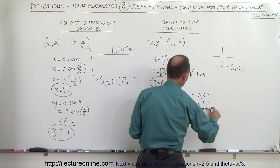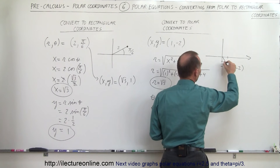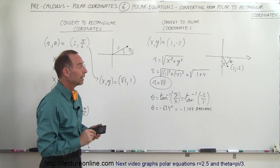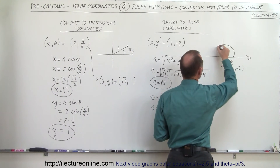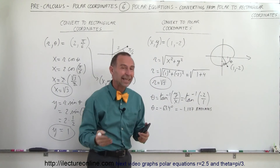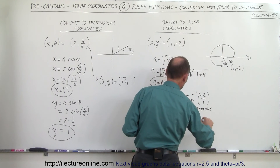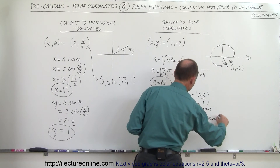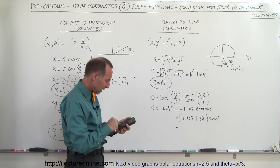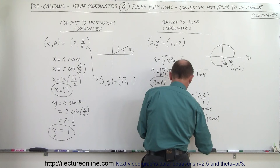If we want a positive angle between 0 and 2 pi, we can add 2 pi to the negative angle. So theta equals negative 1.107 plus 2 pi radians. Calculating that gives theta equals 5.176 radians, which is the positive angle equivalent.